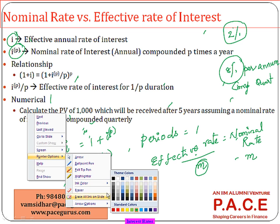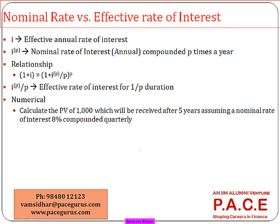The effective annual rate — we know it is (1 + I) — is equated to the nominal interest rate IP. Identify the compounding frequency: if semi-annual, take P as two; if quarterly, take P as four. The quarterly interest rate is eight percent divided by four, and raise to the power P (four). This is the relationship between the nominal rate and the effective rate.